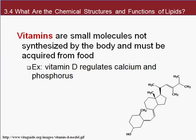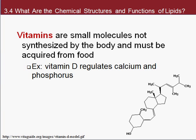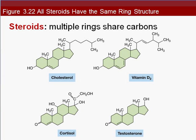Next up are vitamins. Vitamins are small molecules not synthesized by the body — well, except for vitamin D, which can be synthesized — and we get them from our food. Vitamins act as coenzymes and cofactors to help carry out important chemical reactions. Looking at these lipids on screen, cholesterol has four rings; vitamin D has a similar four-ring structure; and cortisol and testosterone are all based on that same four-ring structure.